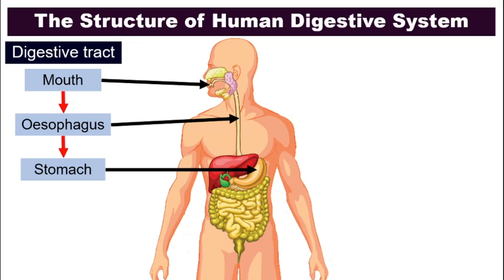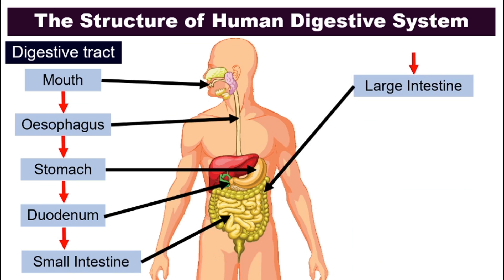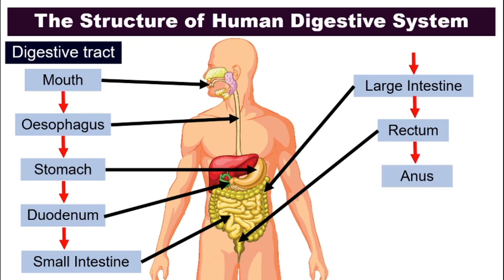From the stomach, food will proceed to enter the small intestine. At the beginning of the small intestine, it's called the duodenum. Then it enters the small intestine, after which it will go to the large intestine — the bigger one on the outside. Then it will go into the rectum, and finally exit through the anus. This whole tract is called the digestive tract.